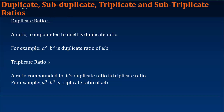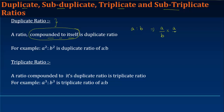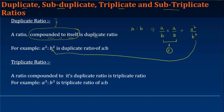In this video we will look at duplicate, subduplicate, triplicate, and sub-triplicate ratios. A duplicate ratio is a ratio obtained when a ratio is compounded with itself. So if we have a ratio a:b, written as a/b, and we multiply it by itself, we get a²/b². This is known as the duplicate ratio of a:b.